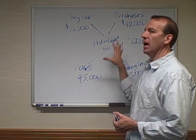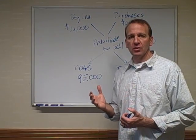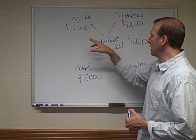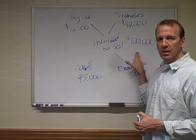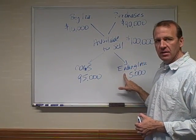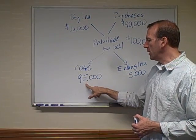So once again, beginning inventory plus our net purchases gives us what we have available to sell. We either still have it as ending inventory, or it got sold and becomes cost of goods sold.